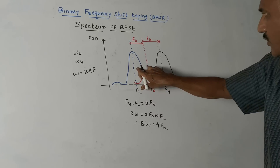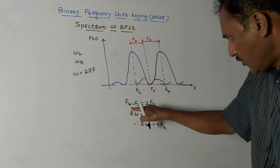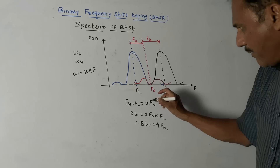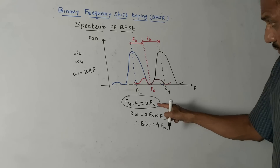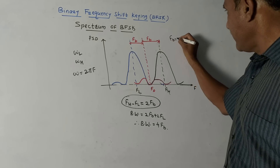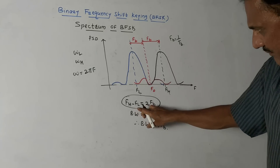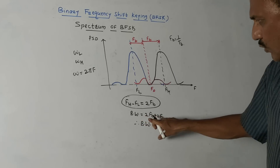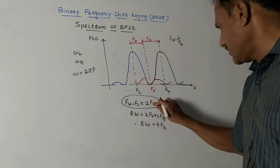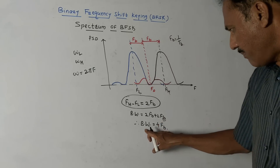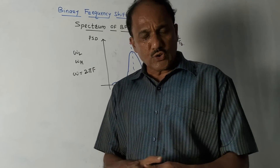The major criterion for BFSK is: fh − fl = fb, where fb is the bit frequency equal to 1/Tb, and Tb is the bit duration. Therefore, the bandwidth is 2fb + 2fb = 4fb, because there are two such frequency graphs contributing. So the bandwidth of a BFSK signal is 4fb. That's it for today's session — thank you for watching.